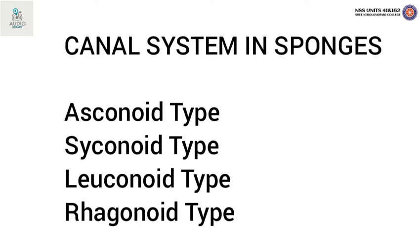Canal system serves sponges in nutrition, respiration, excretion, and reproduction. The water current which flows through the canal system brings in and distributes food and oxygen, and takes away carbon dioxide, nitrogenous waste and feces. It also carries sperm from one sponge to another for fertilizing the ova.